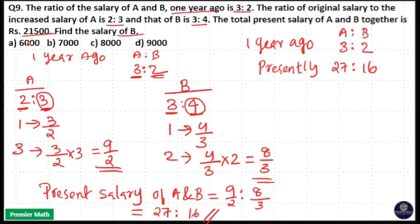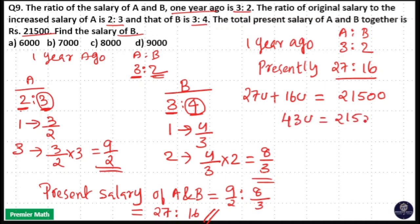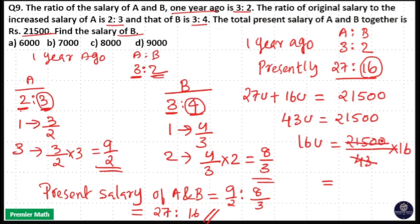The present salary of A and B together is 21,500. That is, 27 units + 16 units = 21,500. So 43 units = 21,500, meaning 1 unit = 500. We have to calculate the salary of B. Salary of B is 16 units. So 16 units = (21,500 ÷ 43) × 16 = 500 × 16 = 8,000. Therefore, the salary of B is 8,000.